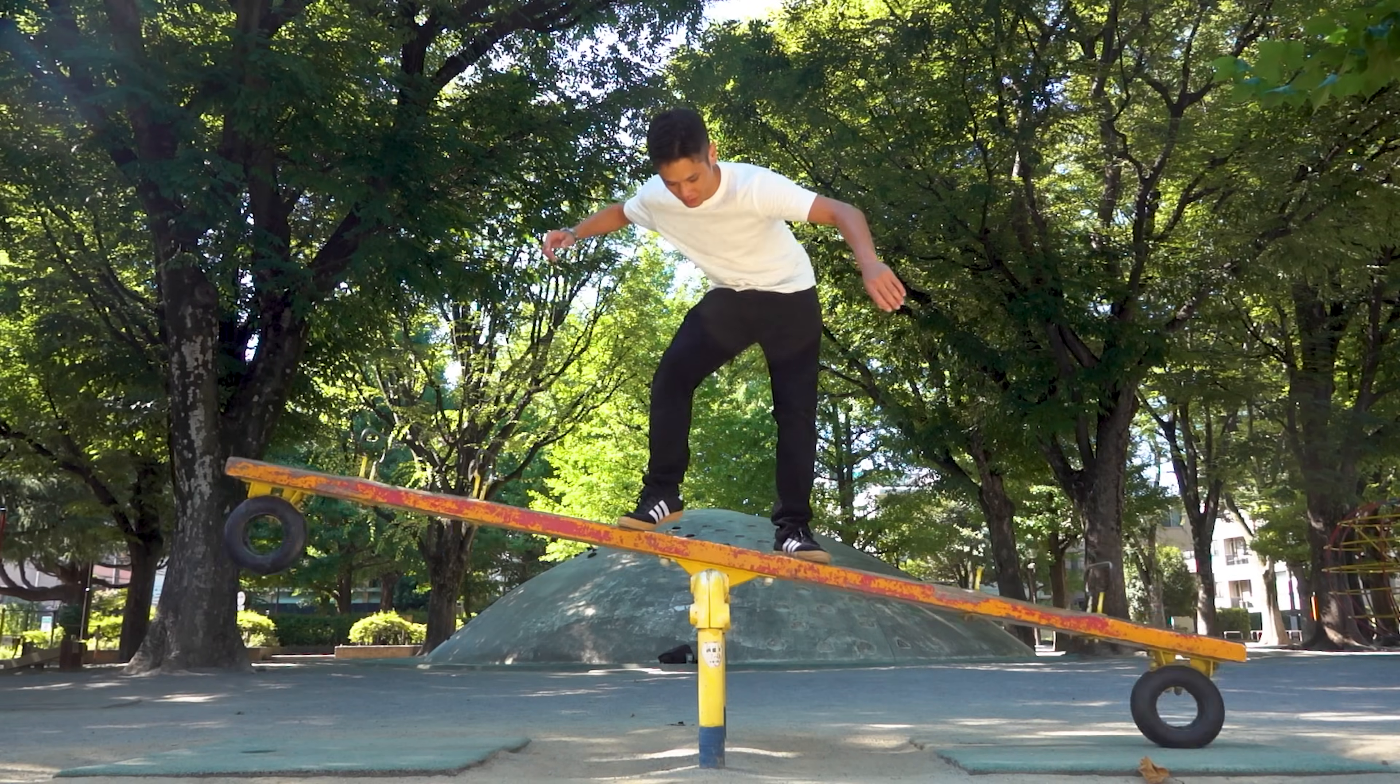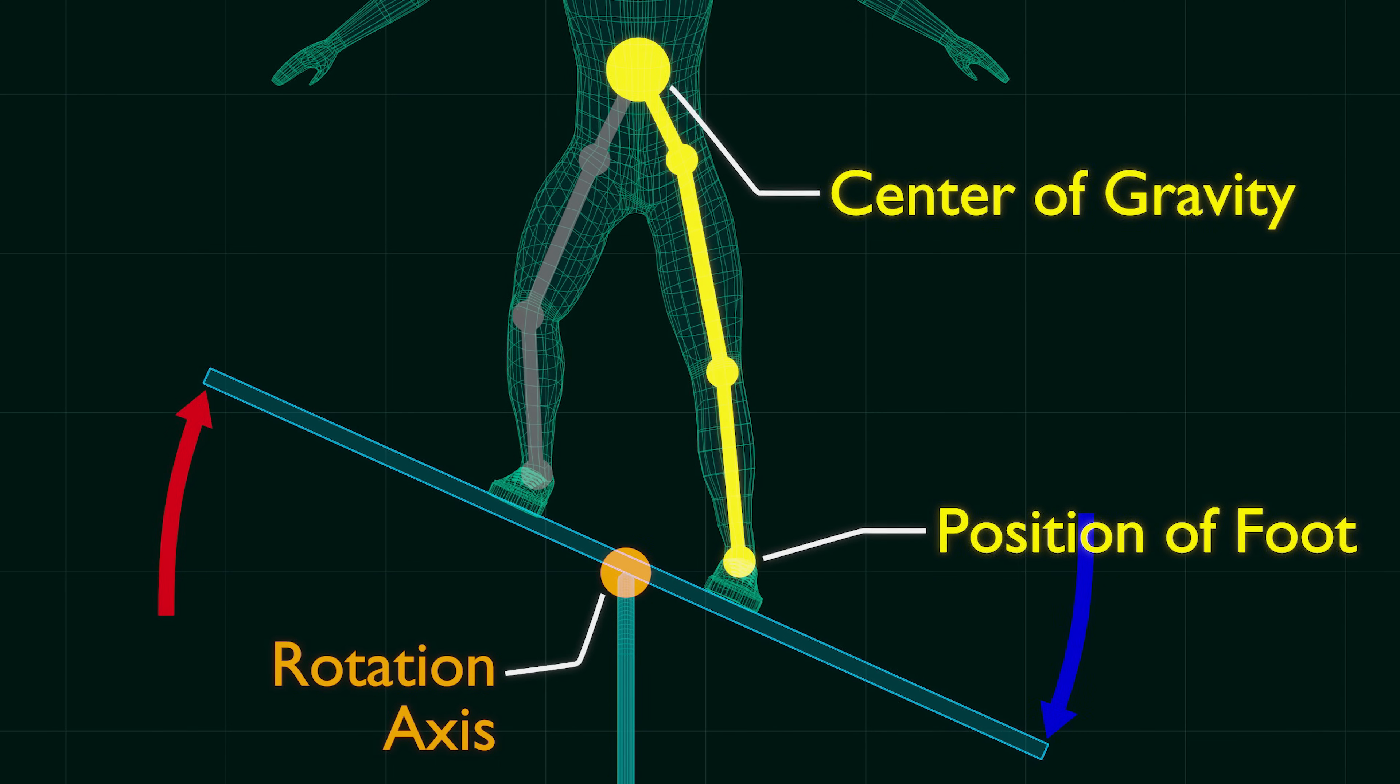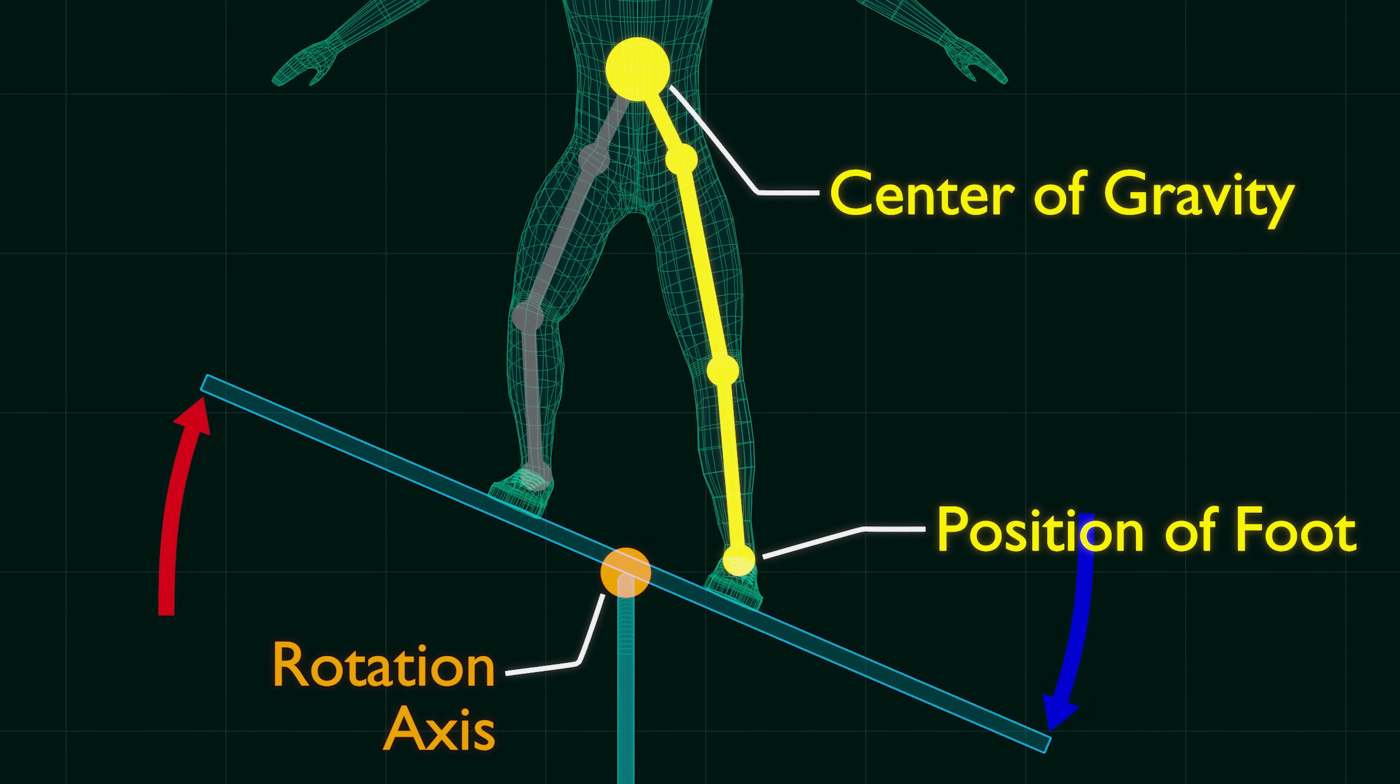But on a seesaw, since your body's center of gravity and foot do not align vertically, the plank will only rotate, no matter how strongly you push down on the foot.